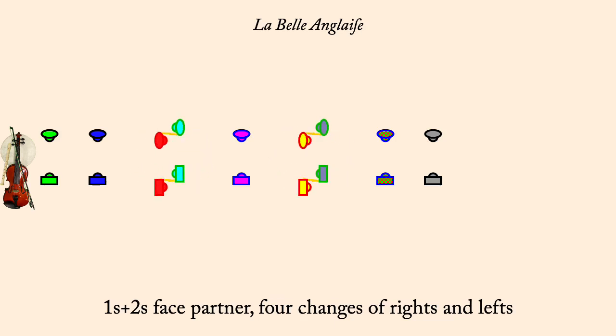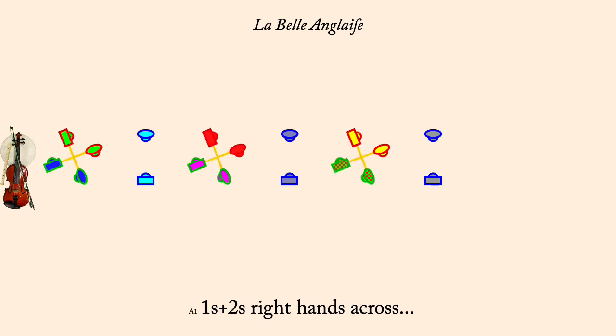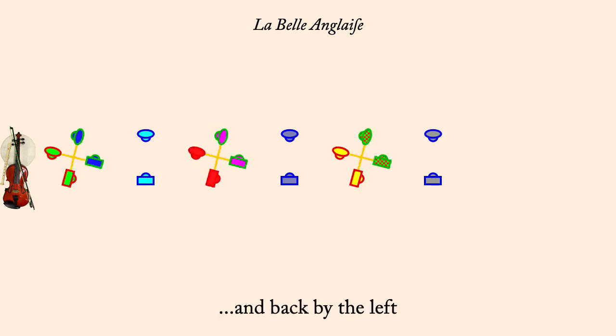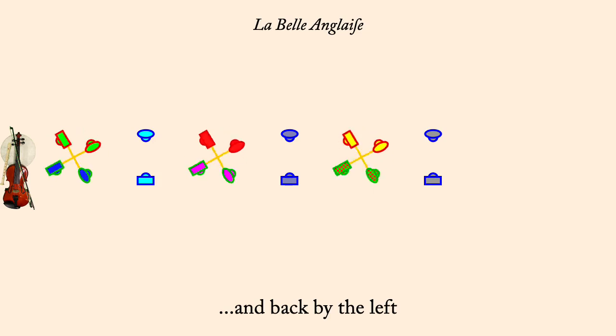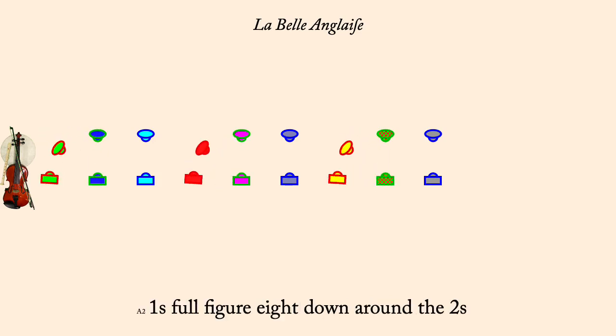Ones and twos, right hands across. And back by the left. Ones full figure eight down through twos.